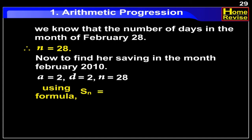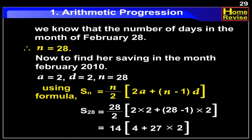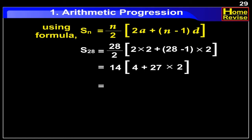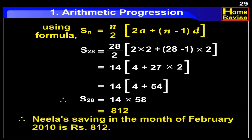Using the formula SN is equal to n upon 2 into (2A plus (N minus 1) into D), substituting the values: S28 is equal to 28 divided by 2, into (2 into 2 plus 27 into 2), which is equal to 14 into (4 plus 54), equal to 14 into 58, which is equal to 812. Therefore, Neela's saving in the month of February 2010 is Rs. 812.